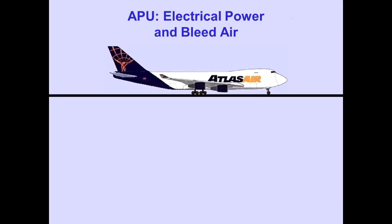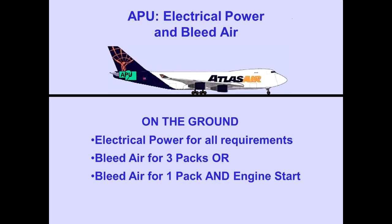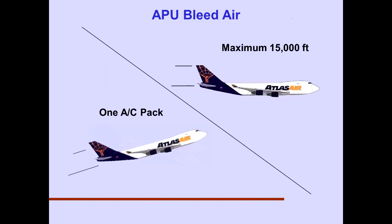The auxiliary power unit is located in the tail section of the airplane. On the ground, the APU supplies enough electrical power for all airplane requirements and sufficient bleed air for three air conditioning packs or one air conditioning pack and main engine start. APU bleed air may be used for one pack during takeoff and in flight up to a maximum altitude of 15,000 feet.